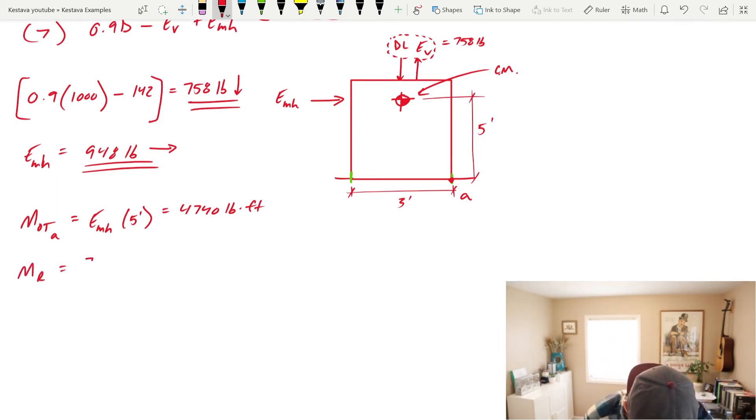That equals 4,740 pound-feet. Our resisting moment is just the net dead load, which is 758 pounds with a moment arm of three feet over two—not three and a half feet, three feet over two. Just want to make that clear. That gets us 1,137 pound-feet. So that we can say is this, this one we can say is that. That gets us a net overturning moment of 3,603 pound-feet.